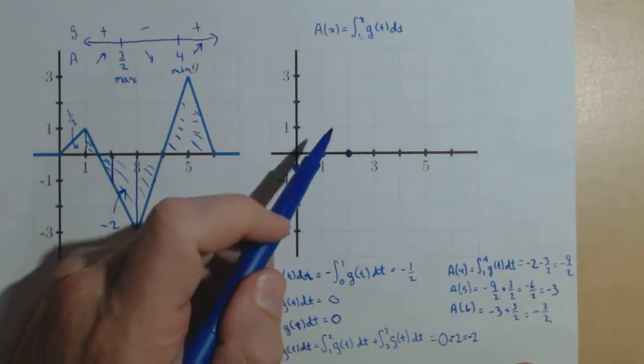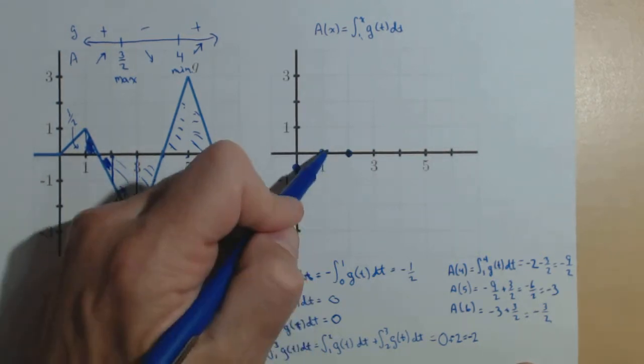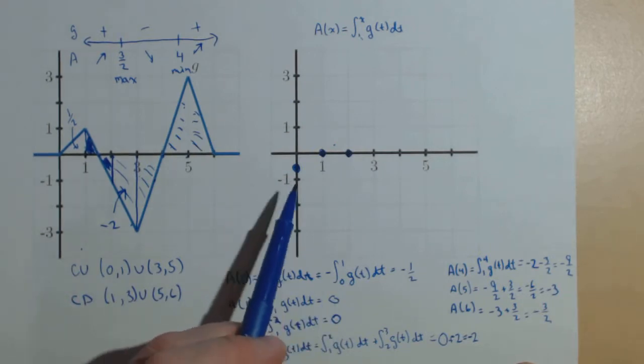Now, remember what we said. We said that at 3 halves, we should have a max. Notice it goes up a little bit between 1 and 1 half, 1 and 1 and 1 half, and down between 1 and 1 half and 2. So, there's a max somewhere right about there. And we'll see that when we draw our curve.